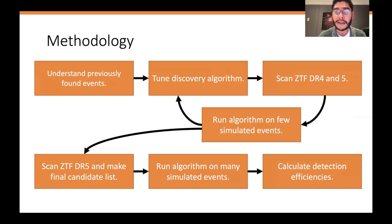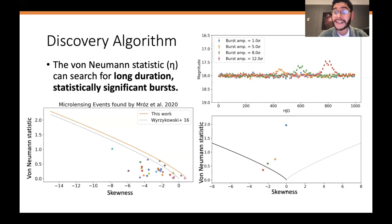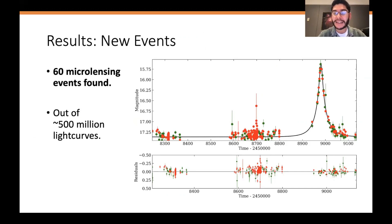The methodology behind discovering these events is to create a discovery algorithm, tune it on simulated events, scan across all of the ZTF data release, and then calculate detection efficiencies to quantify how well our algorithm does. The discovery algorithm primarily relies on the von Neumann statistic, which can search for long duration statistically significant bursts. Here you're seeing one of the microlensing light curves. We found 60 microlensing events previously undiscovered out of 500 million ZTF light curves, showing the ZTF G band and R band points scaled to be plotted on the same light curve.